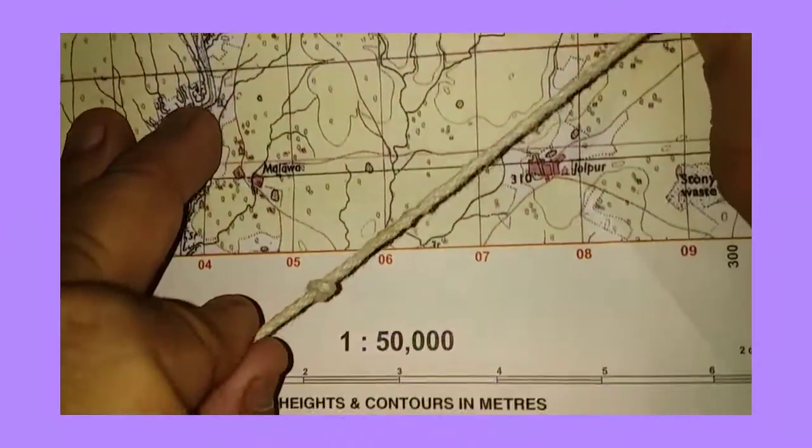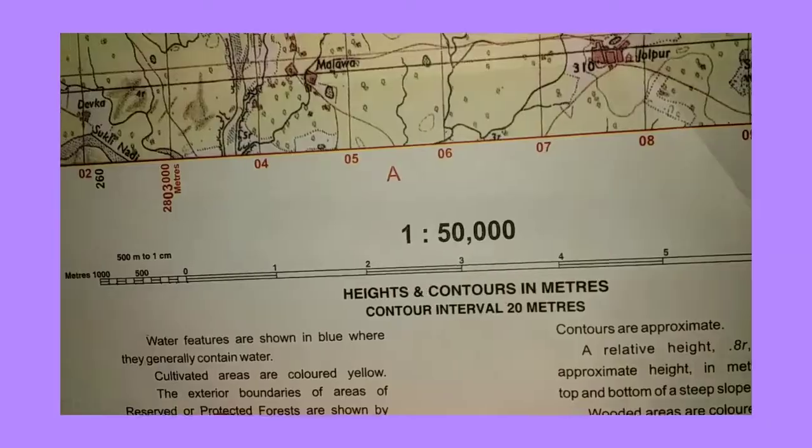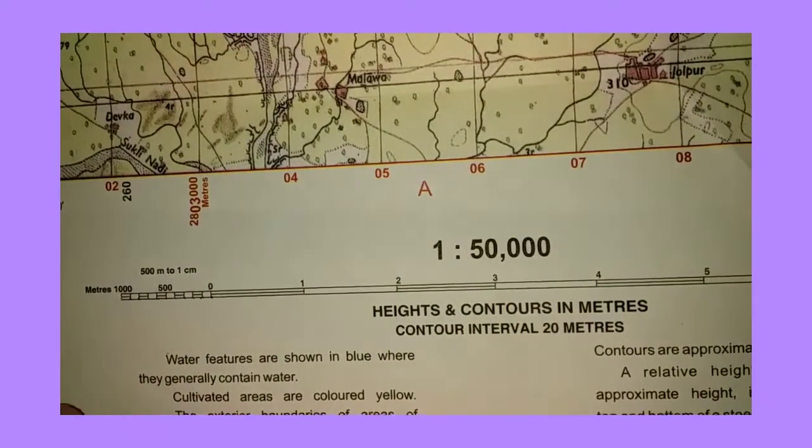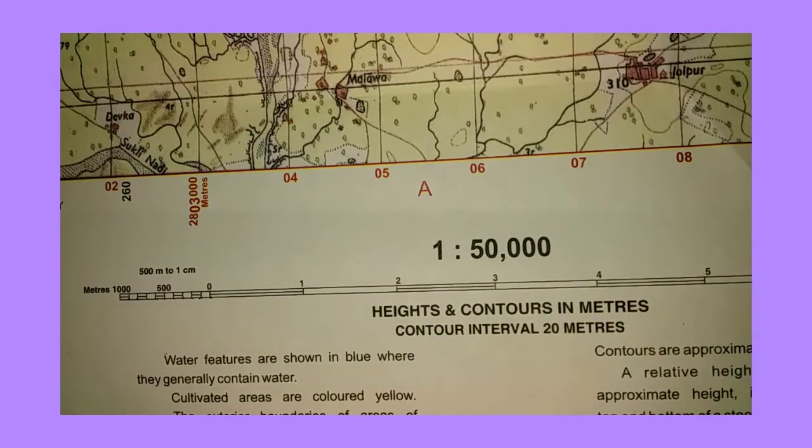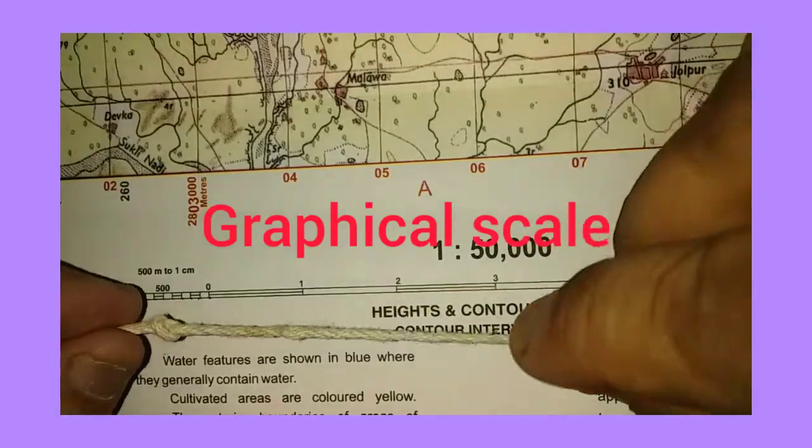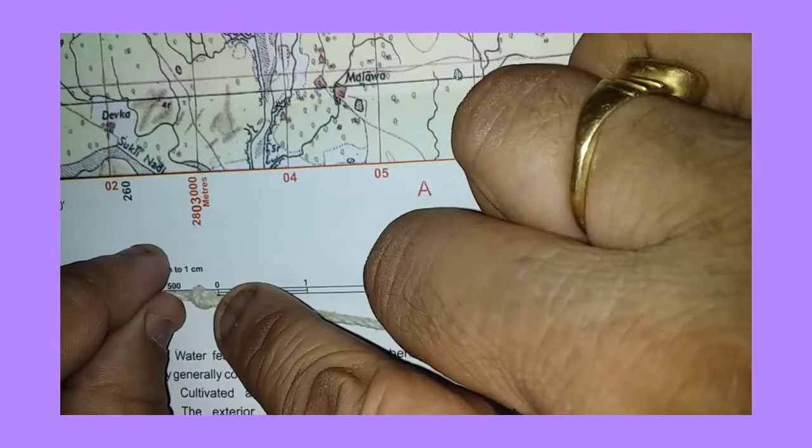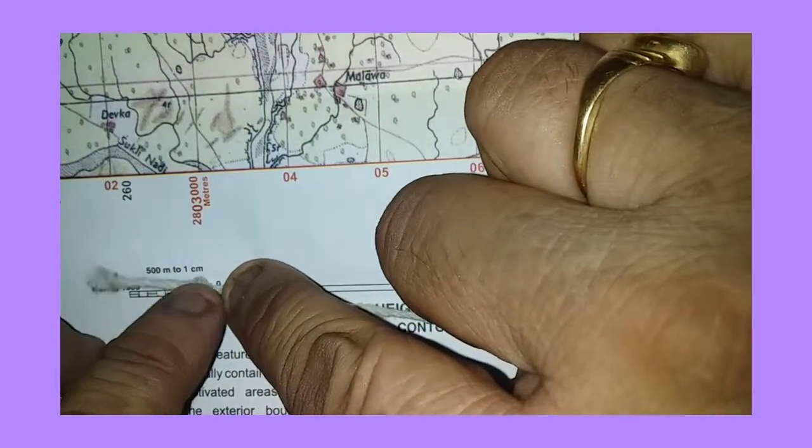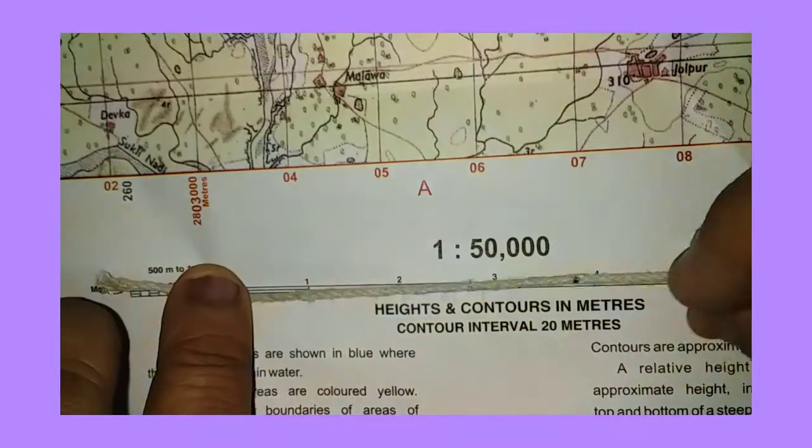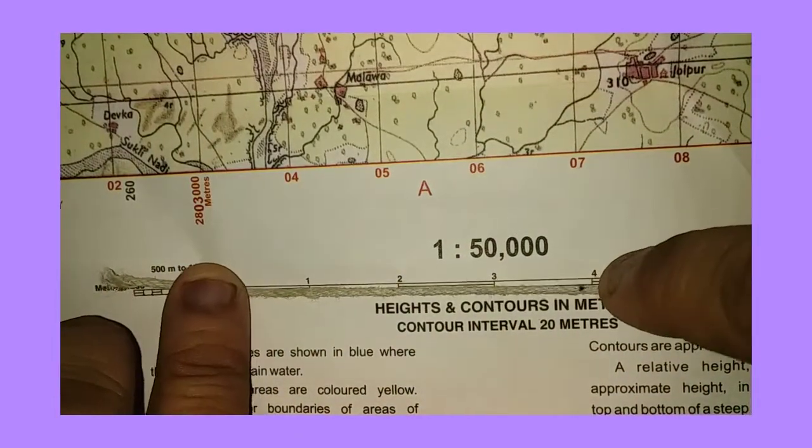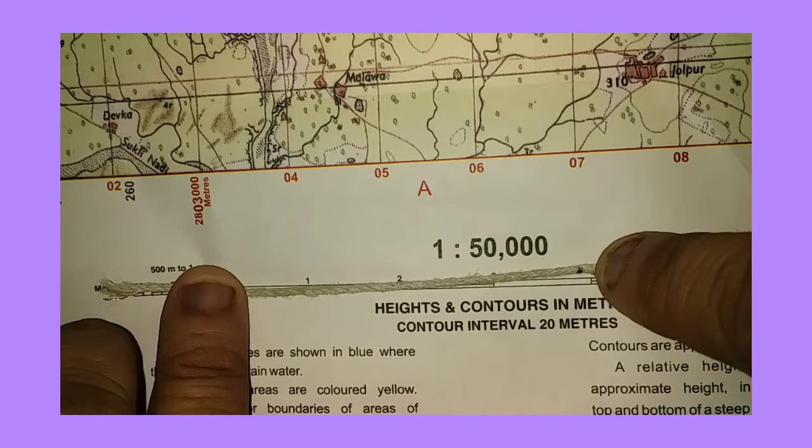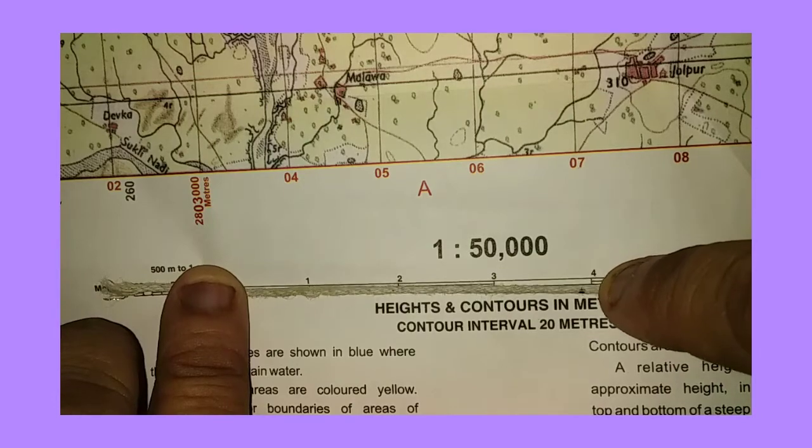Now we will refer to the scale provided at the base of the topo sheet. I will place the knot at 0, and you can see that it is more than 3 kilometers.